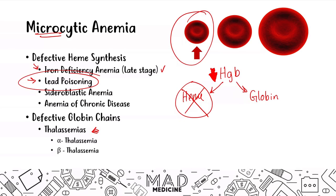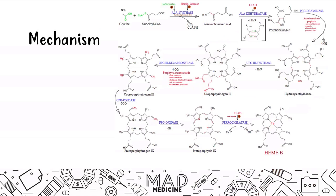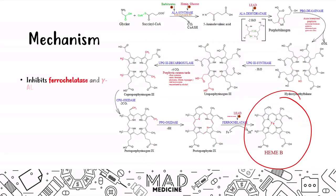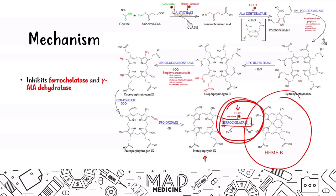So how does that happen? What is the mechanism of action in lead poisoning? This is the pathway of heme synthesis, with heme as the end product. Lead is going to inhibit two main enzymes along the path to producing heme. The first enzyme is ferrochelatase, and the second is ALA-dehydratase. Ferrochelatase is important in the very last step of heme production — the binding of iron to protoporphyrin — and lead inhibits this enzyme, so you cannot produce heme.